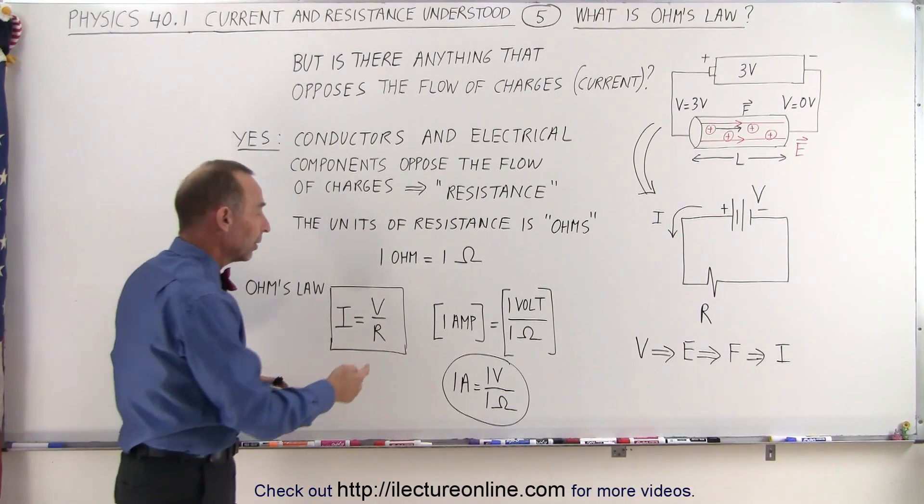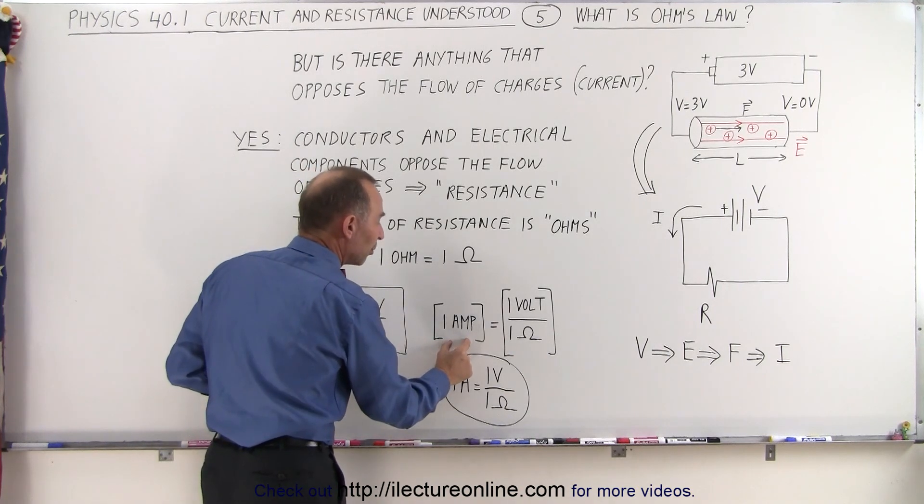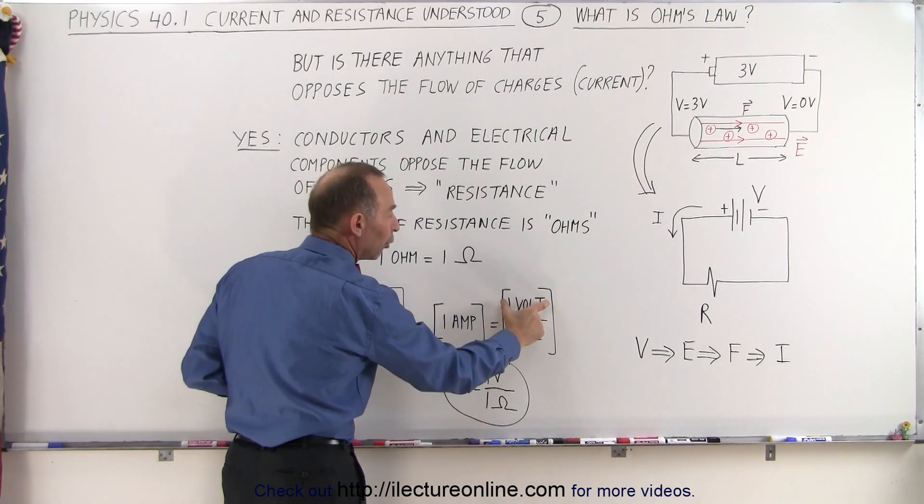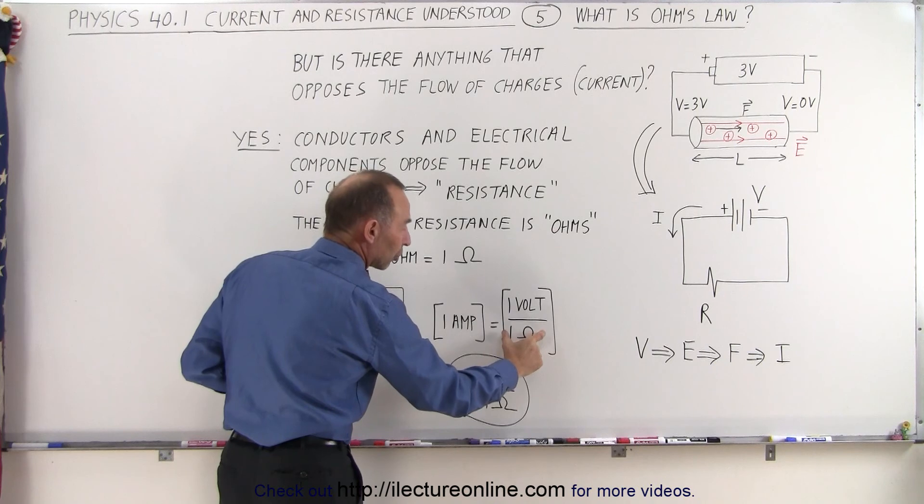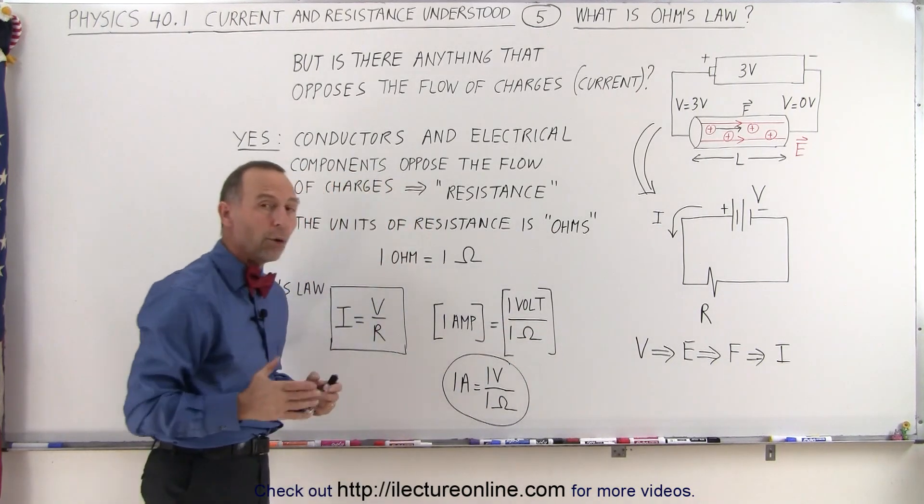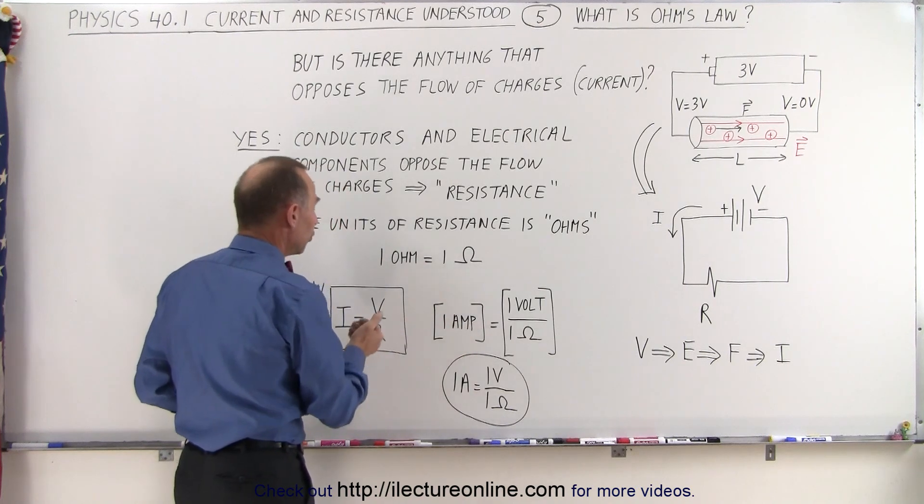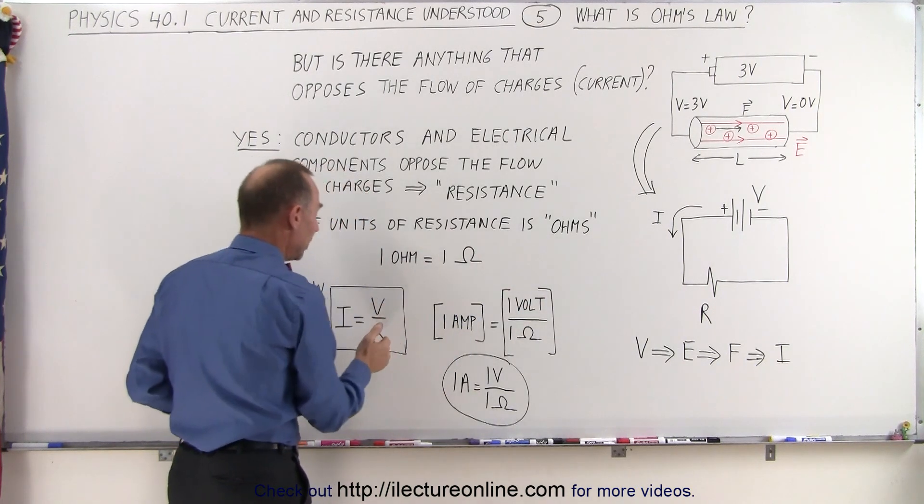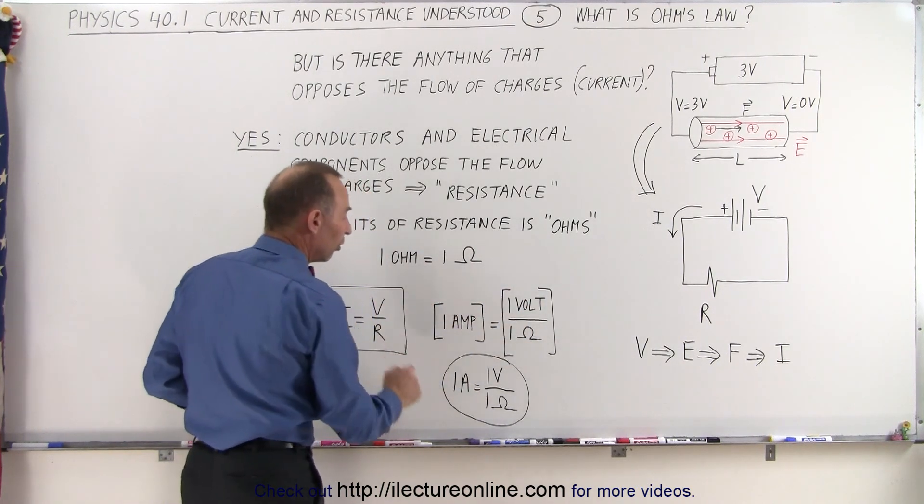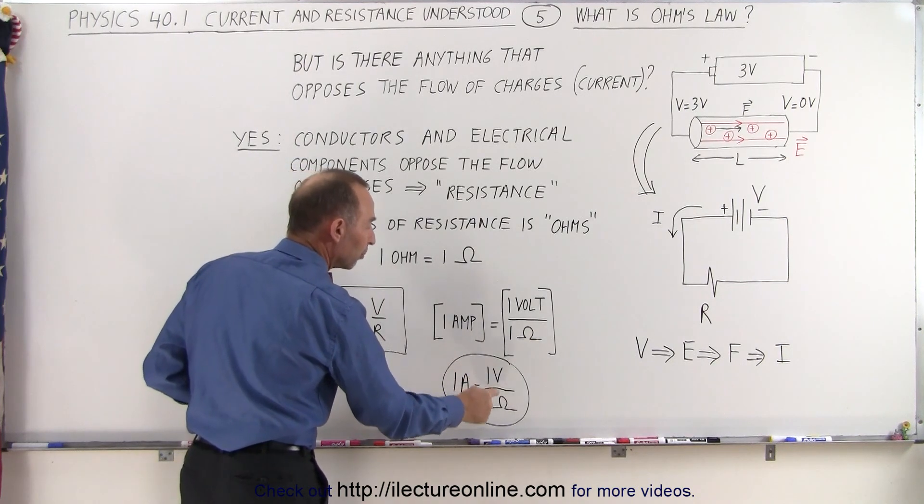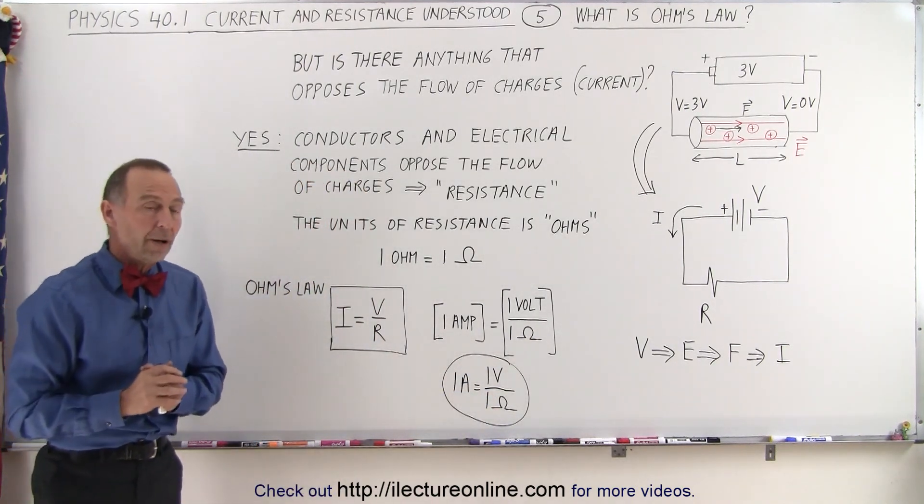You can say that a current of one amp is produced when you have one volt applied to the circuit and in the circuit there exists a resistance of one ohm. So by definition, the units of current is amps, the unit of voltage is volts, and the units of resistance is ohms. One amp equals one volt per one ohm. That is Ohm's Law.